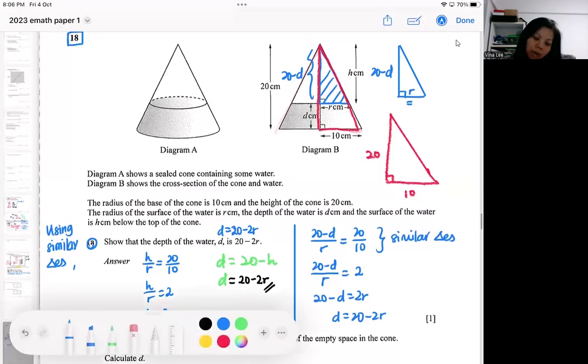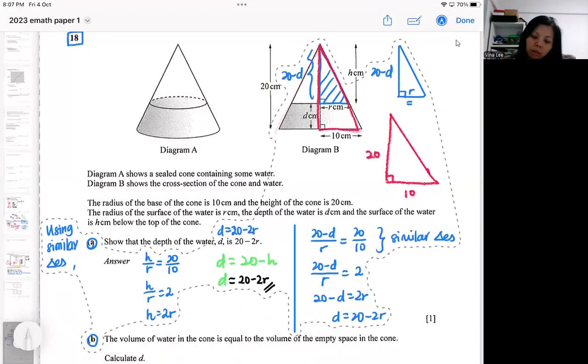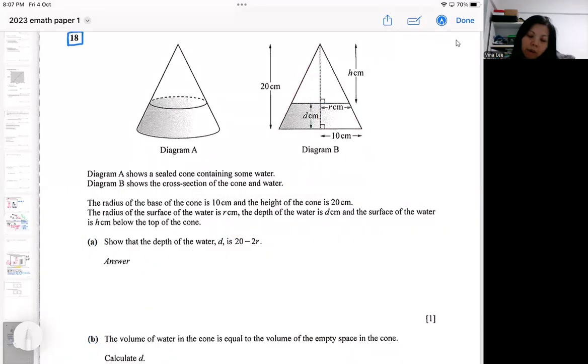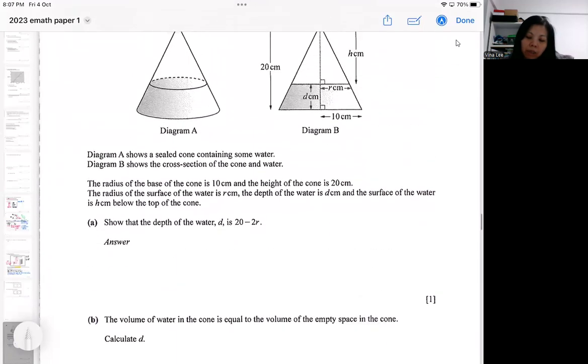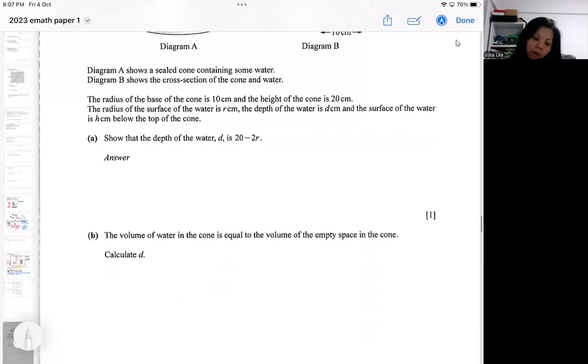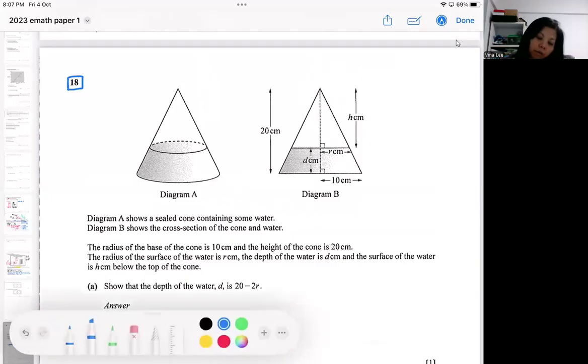The second part, some students actually get stuck when they see like the volume of water in the cone is equal to the volume of the empty space. They didn't know what to do. So very simple. If they mention about the volume of the water and they also mention about the volume of the empty space, you do out the algebra separately first. You try to do out the algebra separately first.